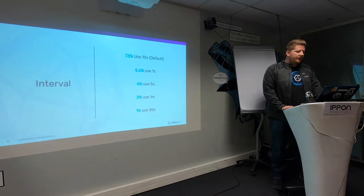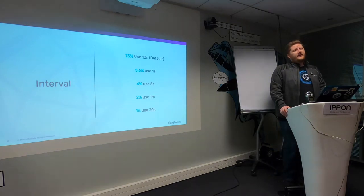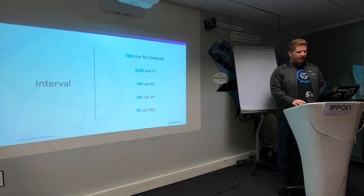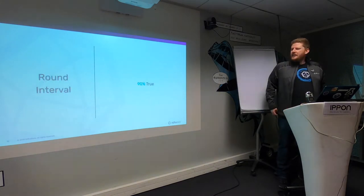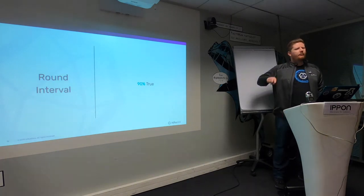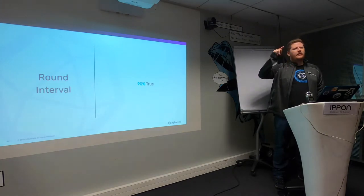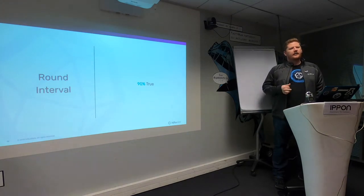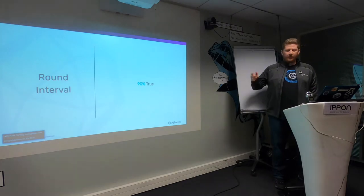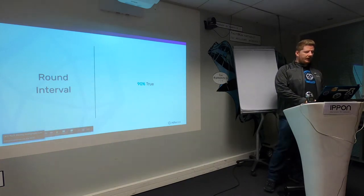With the configuration options, most people use the default 10-second interval — 73% — and 1 second, 5 second, 1 minute, 30 seconds are all really standard. The round interval means that no matter when you start Telegraph, it's going to round the collection interval up to be on the second. So if you have a 10-second collection interval, it's actually going to run at 10, 20, 30, 40, 50 seconds. Most people use that because it's the default, so that made sense.